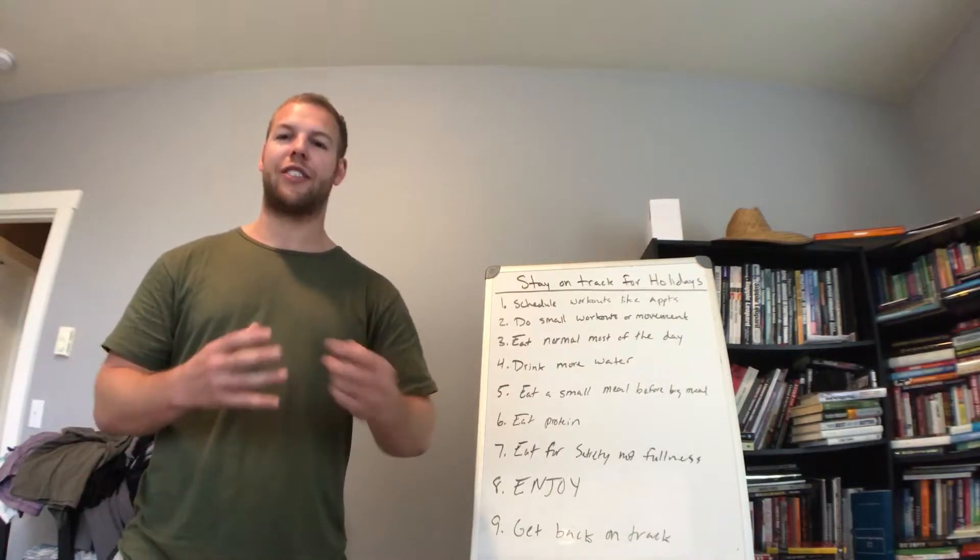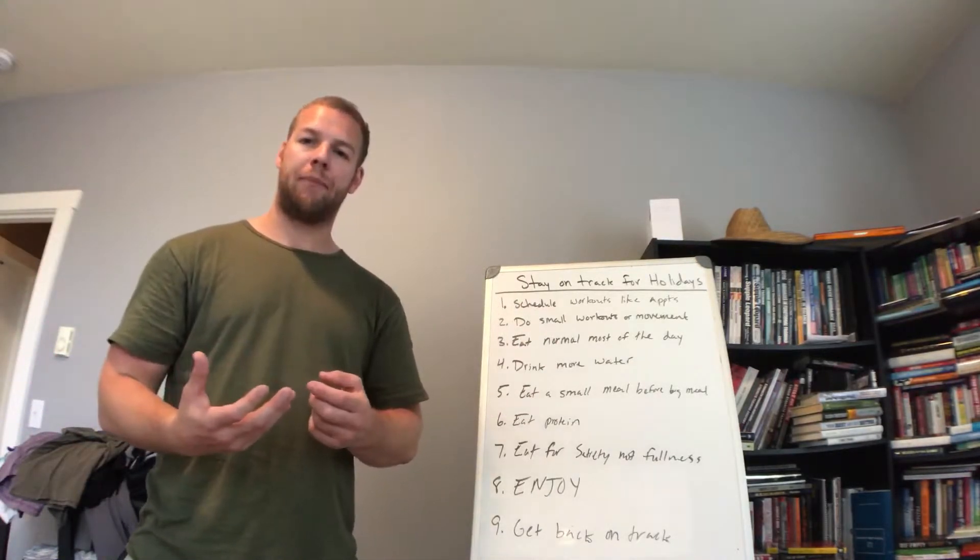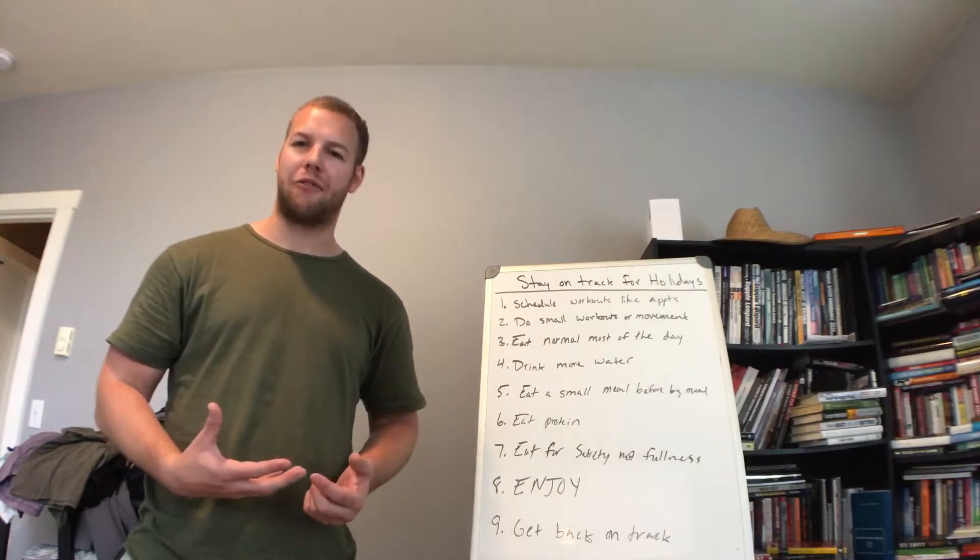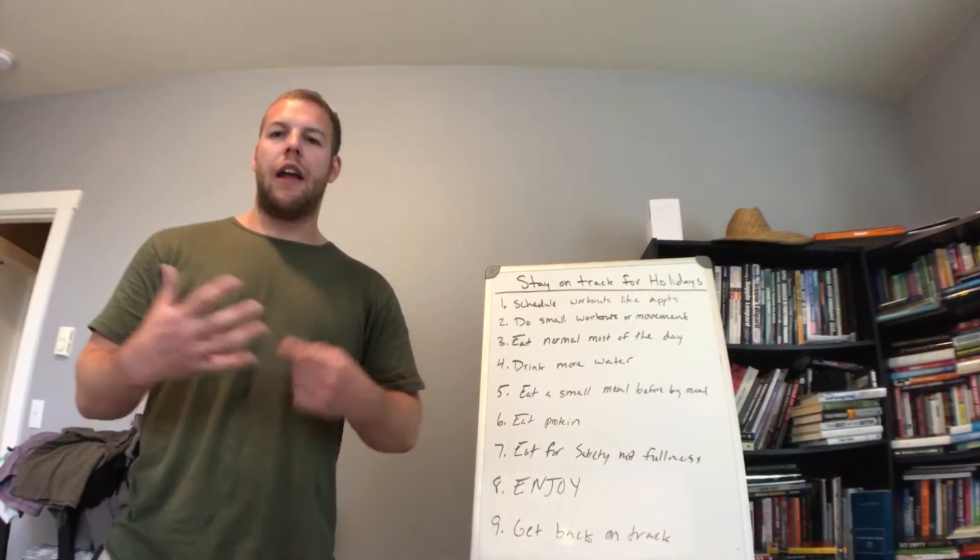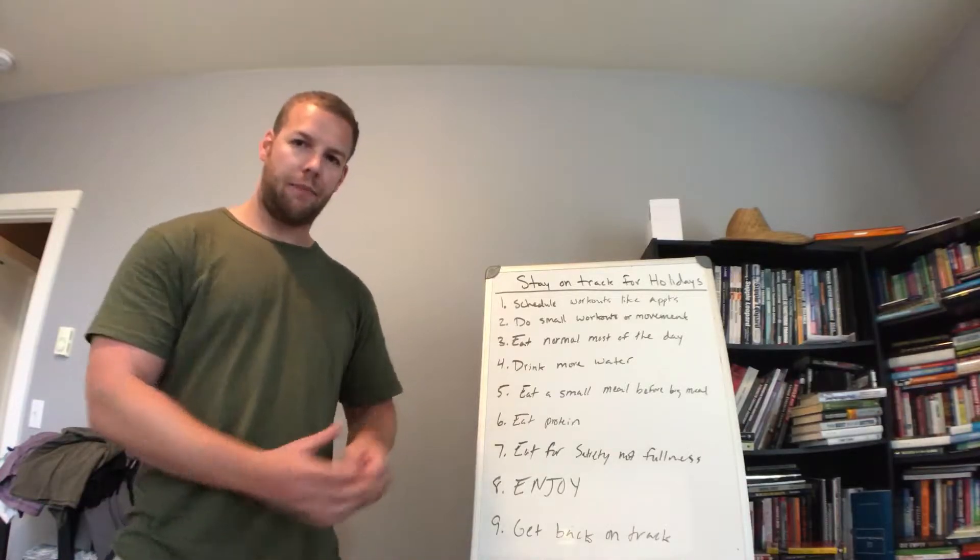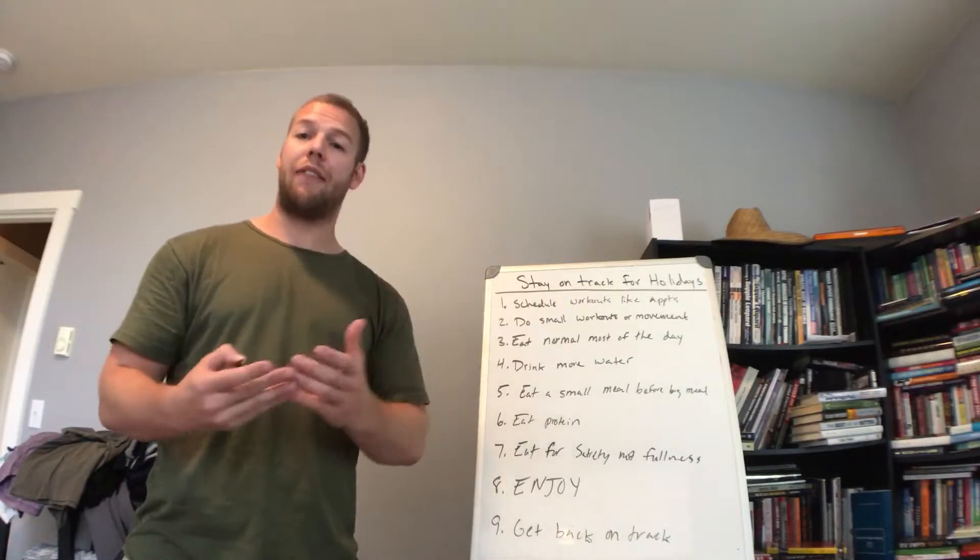Tip number seven. Eat for sanity, not fullness. So what this means is eat to appease yourself and know that you had something, you tried everything. Because I know for myself, if I go to my grandma's house and I don't try everything, she's going to tell me that I need to. So I want to make sure that I can eat a little bit of everything, but I'm not trying to stuff myself.